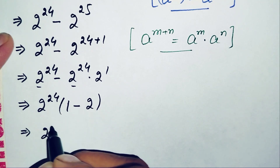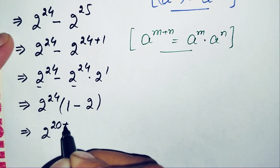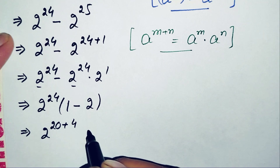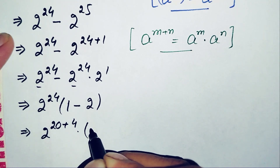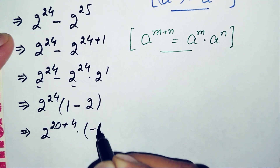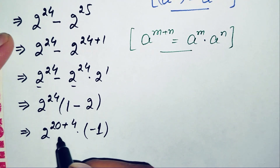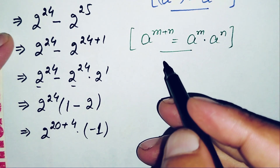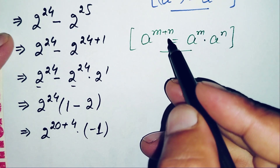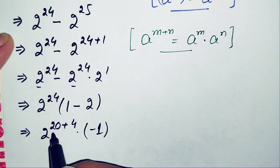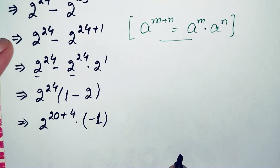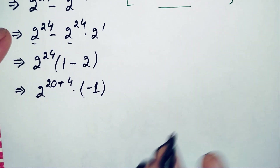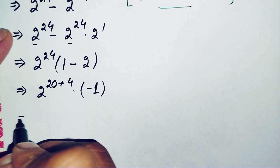We write 2 raised to power 24 as 2 raised to power (20 plus 4). Meanwhile, 1 minus 2 gives negative 1. Using the property a raised to power m plus n equals a raised to power m times a raised to power n, we split this into 2 raised to power 20 times 2 raised to power 4.